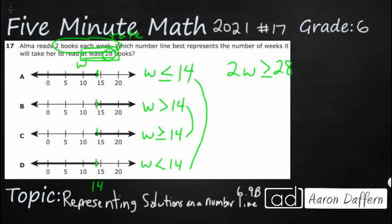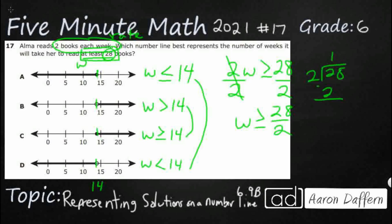Now we have our expression: 2w ≥ 28. We use algebraic reasoning to isolate the variable — we need to get rid of the 2 by using its inverse operation, division. Dividing both sides by 2 gives us w ≥ 28/2, which simplifies to w ≥ 14. So w is greater than or equal to 14, which means we choose between B and C — and since it includes 14 with a closed circle, our answer is C.